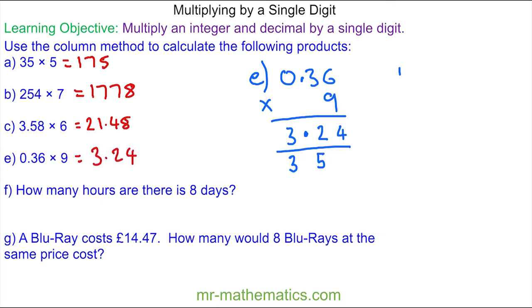And for question F, how many hours are there in 8 days? Well, there are 24 hours in a day. So 24 multiplied by 8.